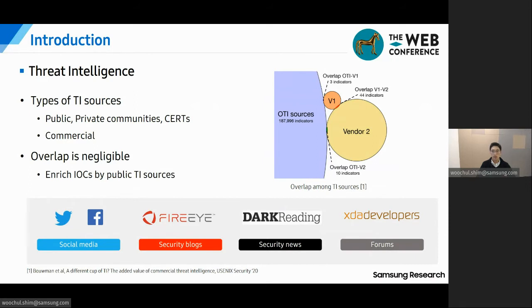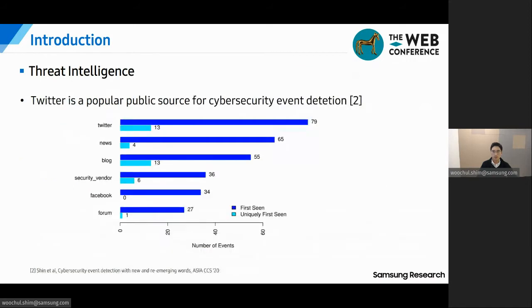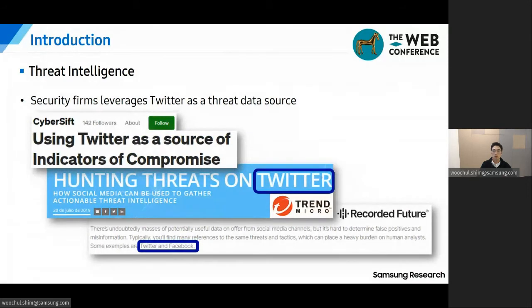Here are examples of public TI data sources. Social media such as Twitter and Facebook has threat-related tweets and posts. We can think of security blogs operated by security vendors — they usually post analysts' reports of malware or attacks. Similarly, security news and developer forums are also public threat data sources. There is work showing Twitter is a promising public threat data source for cybersecurity event detection, being largely the first source and sometimes the only source to discuss cybersecurity events. Security firms also claim that Twitter can be used as a threat data source, because news media, security firms, and individual security researchers often use Twitter to quickly spread their findings of a cyber threat after publishing their original articles or reports.